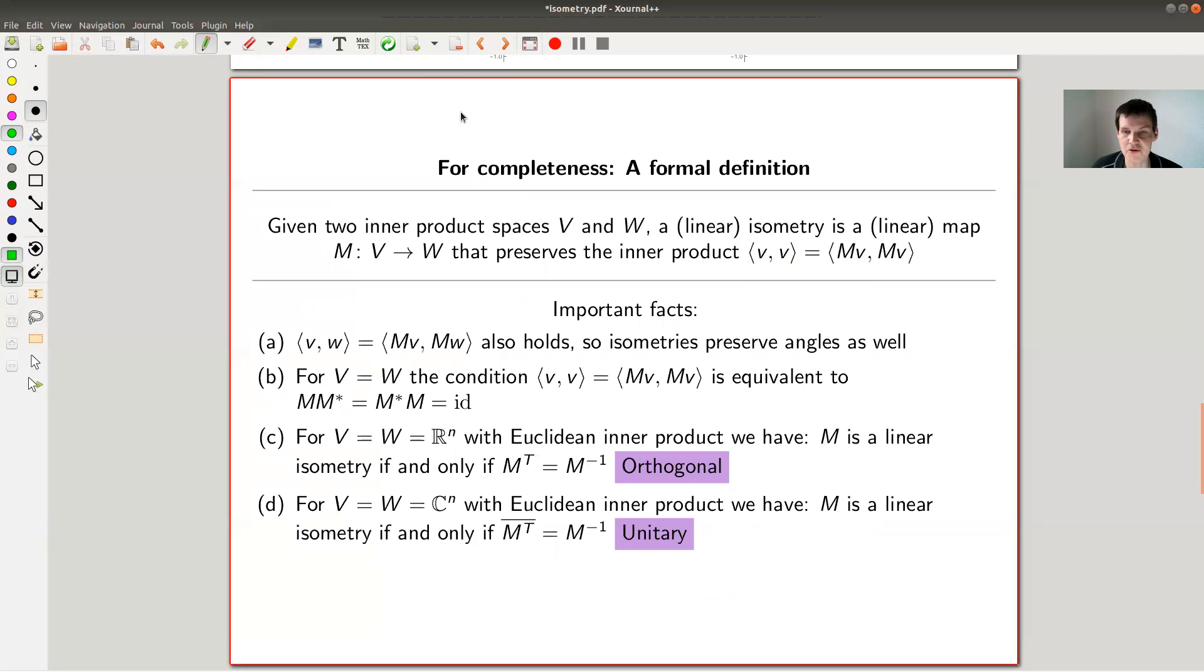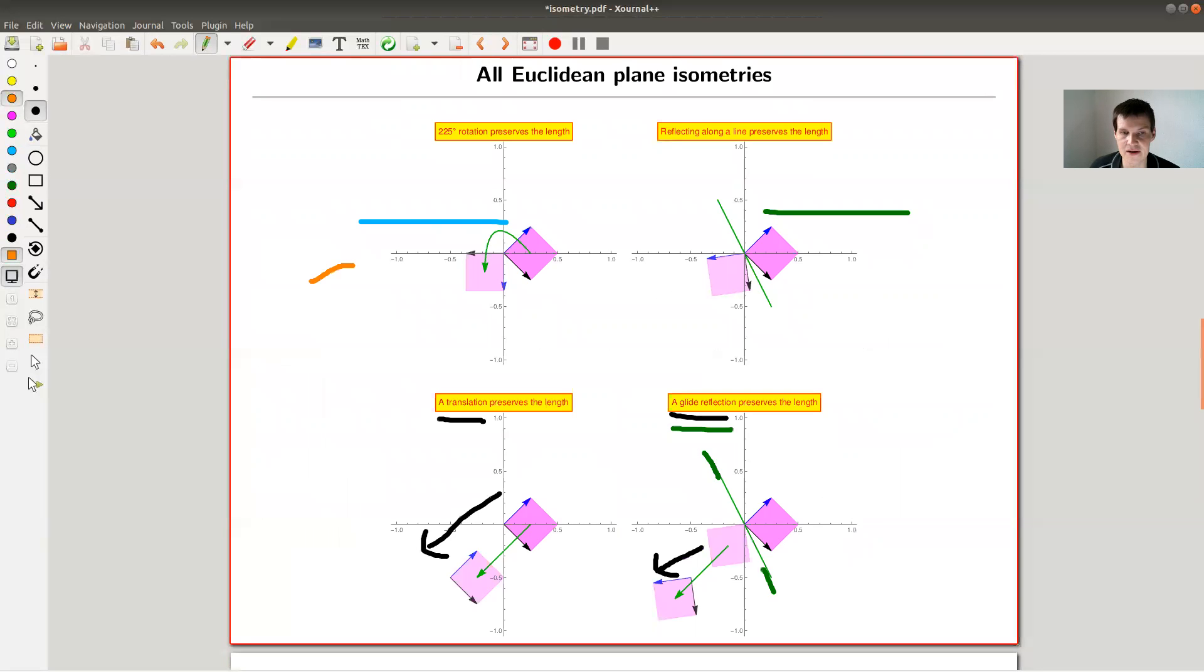And, well, an isometry is defined as exactly what you think it is. You have two inner product spaces. In general, you can make this more general. You would have two normal spaces, but it doesn't matter. So you have two inner product spaces, V and W. And an isometry is exactly what you think it is. It preserves the lengths. And the lengths in the inner product space is just the inner product of V with itself. And there might be, you might want to call it the linear isometry if it's a linear map. So these two are linear because they preserve the origin, and these are not linear.